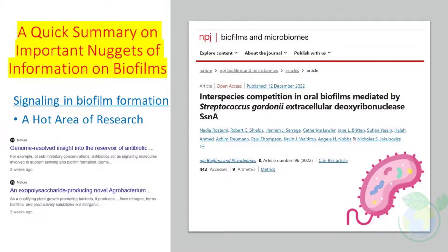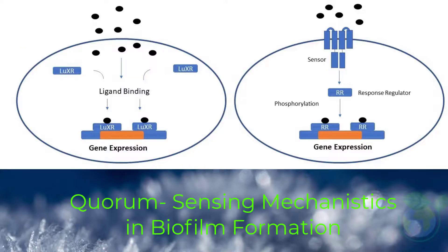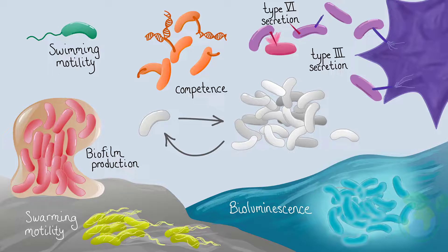Bacteria synchronize their gene expression by producing and responding to autoinducers. Quorum sensing regulates biofilm formation in several bacterial species. c-di-GMP is a second messenger that modulates a variety of bacterial growth phenotypes, including biofilm formation. In addition, recent research also demonstrates that sRNAs are also biofilm regulators.